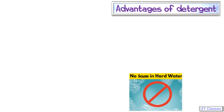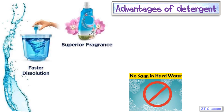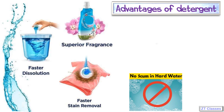Soap forms scum in hard water and cannot be used, but detergent can be used in both soft water and hard water. Other than that, detergents dissolve in water fast, and detergent can be used to wash all kinds of clothes.